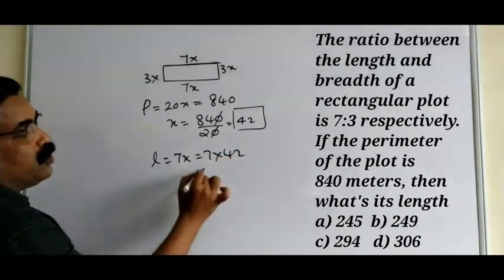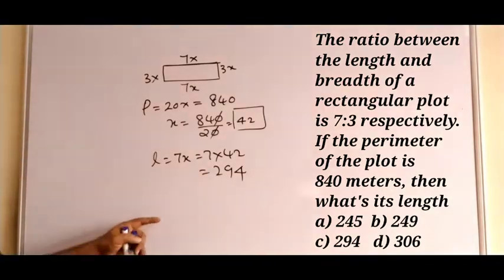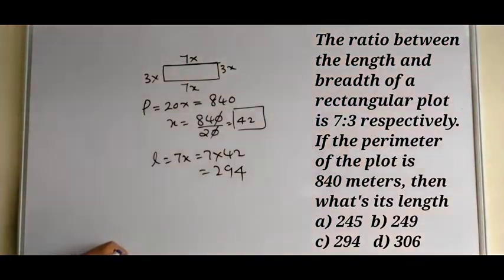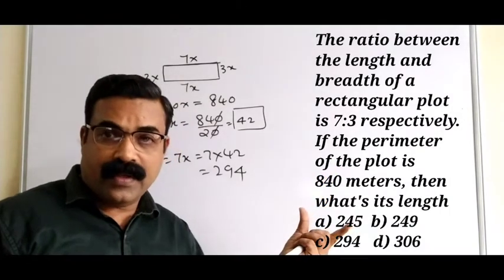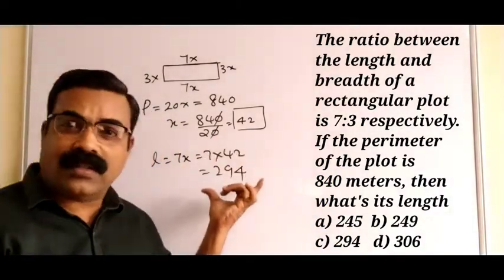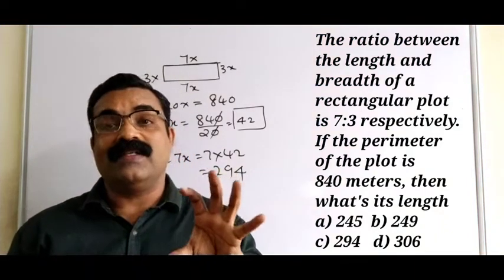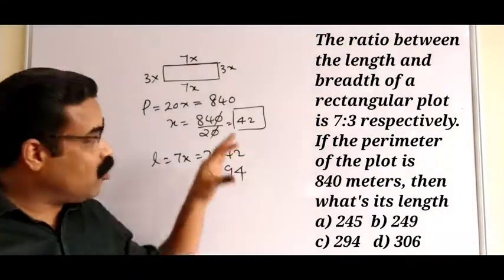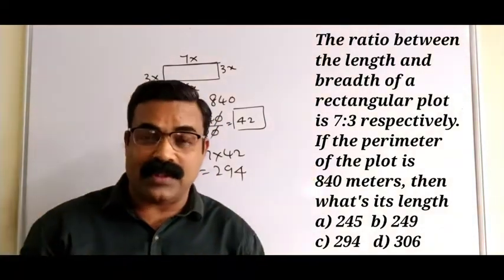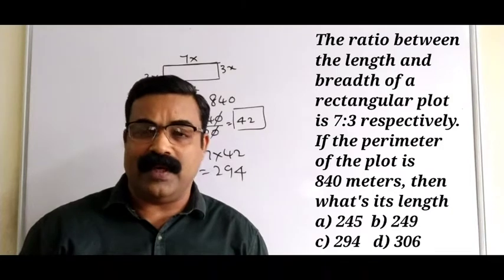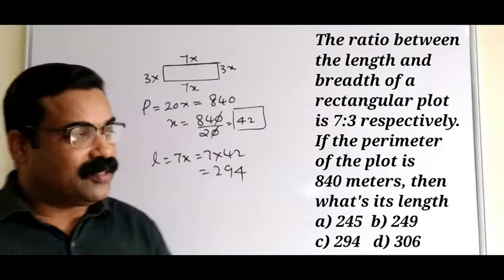We need to find the length of the rectangular plot. Length = 7x = 7 × 42 = 294 meters. Accordingly, you can mark the correct option. The calculation part is not tough — understand what is asked and proceed. Once you practice more questions, you can definitely increase your speed and easily crack all these types of questions.